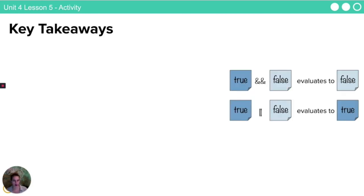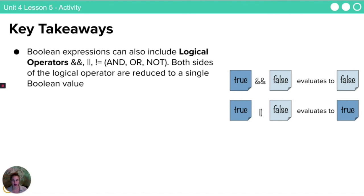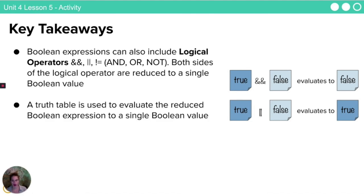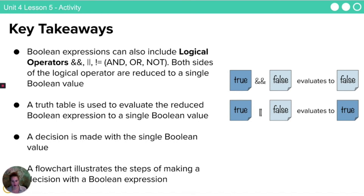We also talked about Boolean operators, or excuse me, logical operators. Boolean expressions include and, or, or not. Both sides of the logical operator are reduced to a single Boolean value. And then a truth table is used to evaluate the reduced Boolean expression to a single Boolean value. A decision is made with a single Boolean value, and a flowchart can be used to illustrate the steps of making a decision with a Boolean expression. Thank you for joining me today. This has been Unit 4 Lesson 5 activity about comparisons, Boolean values, and conditionals. Take care.